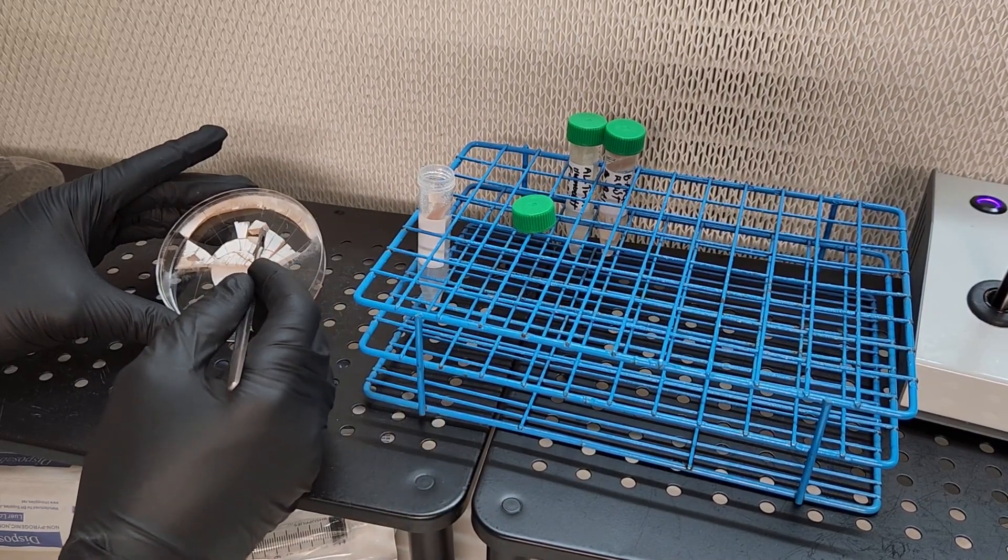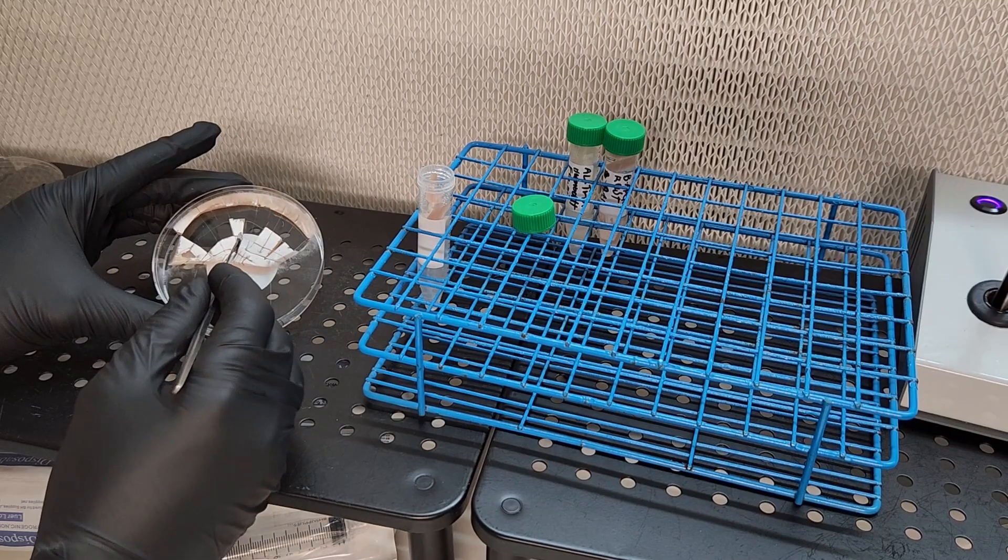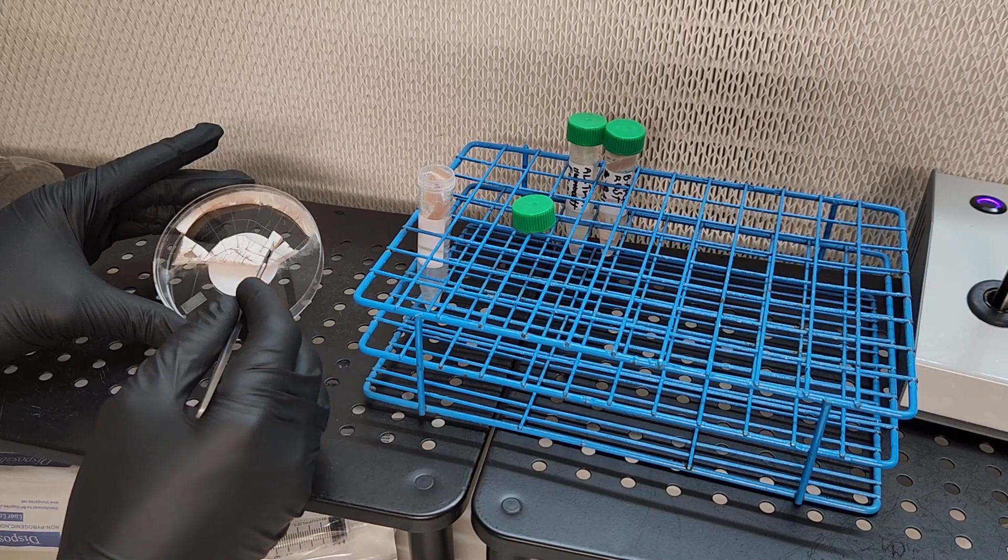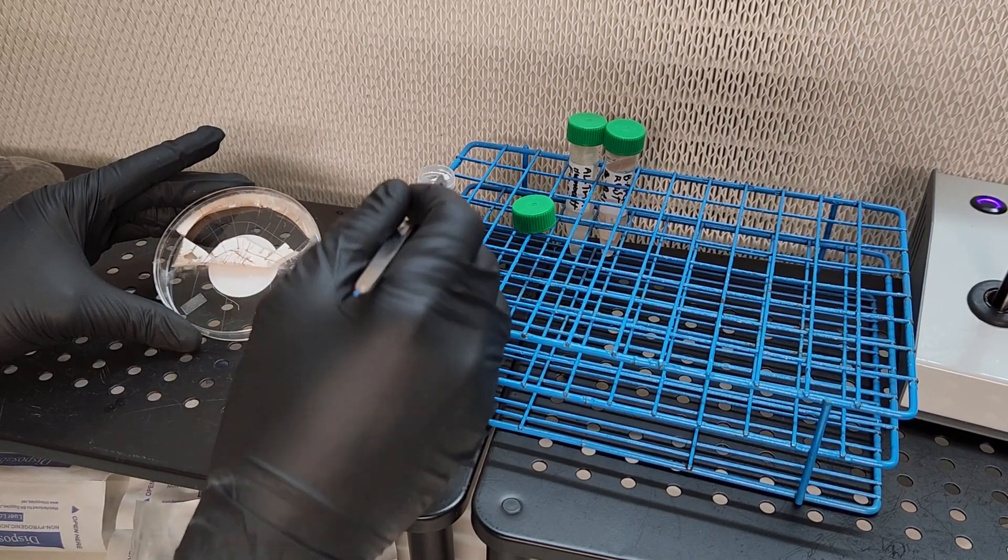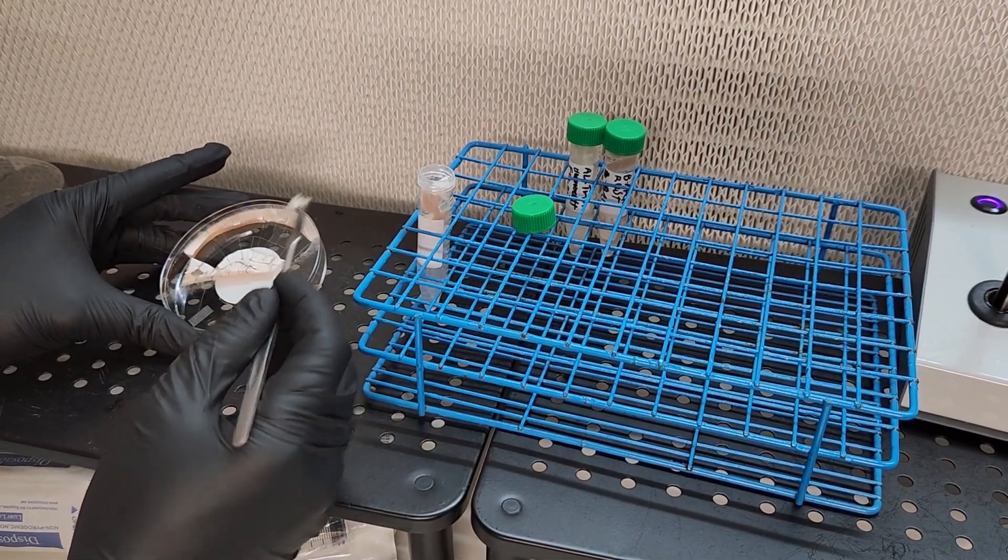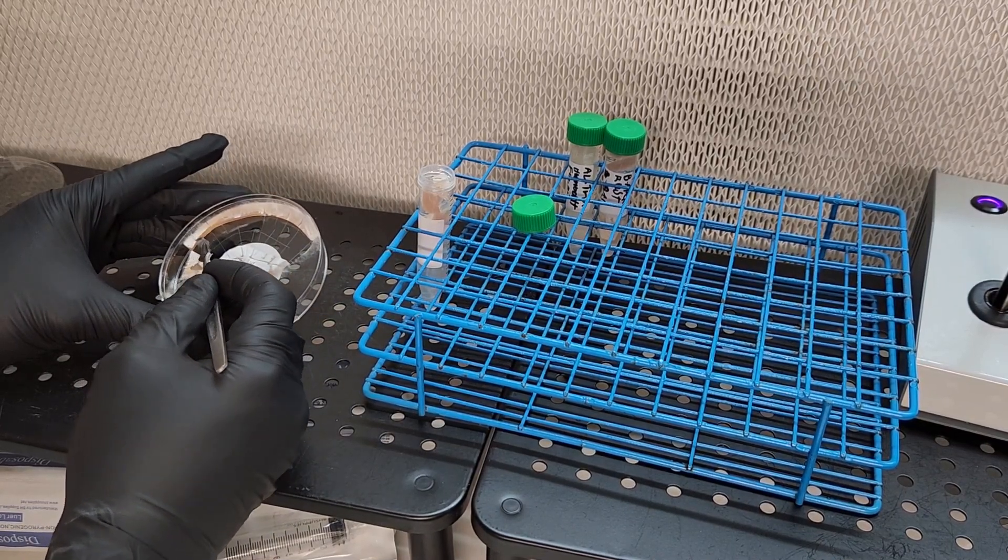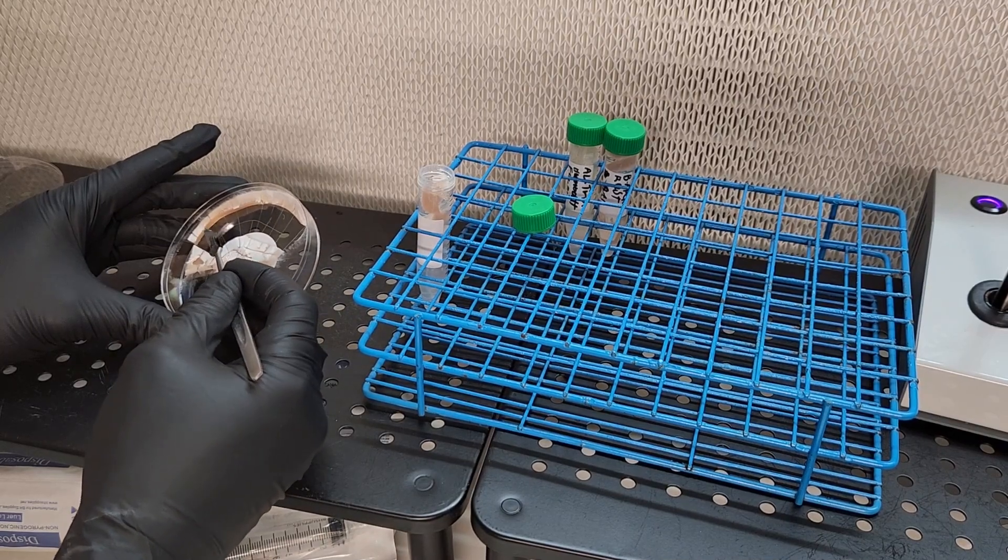Here you can see I'm simply taking my scalpel, cutting transfers, and transferring them directly into the sterilized distilled water. I filled the slants to about eight milliliters as these are ten milliliter vials. As I add these transfers into the vial, it will raise the water level until there's almost no headroom.